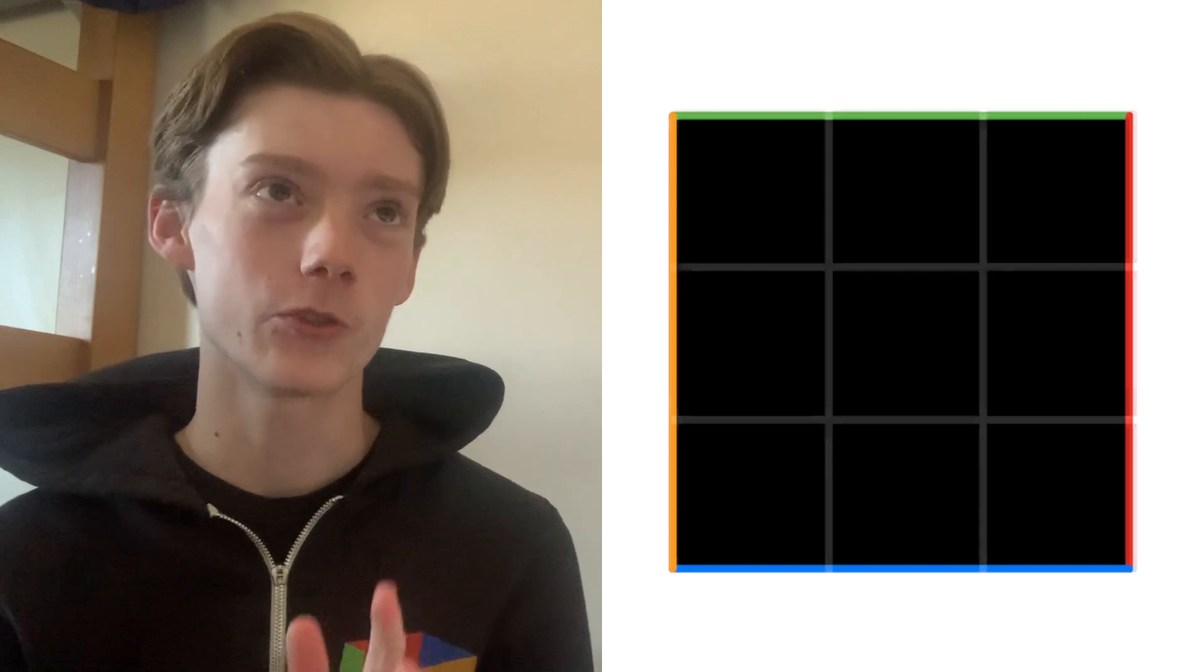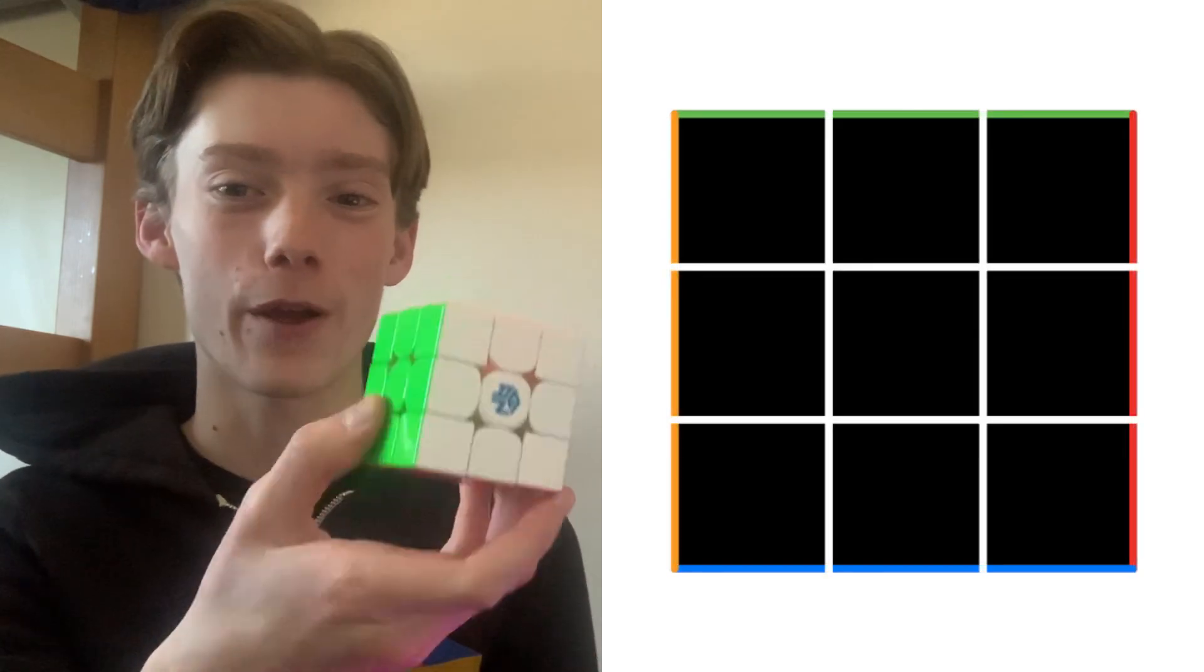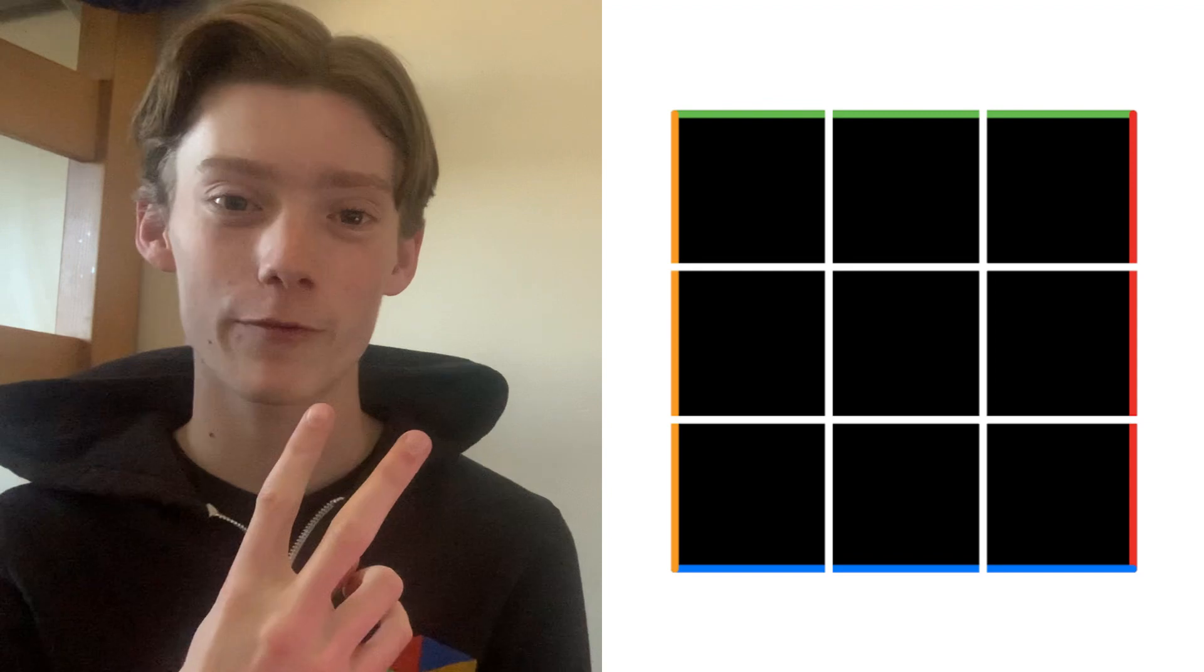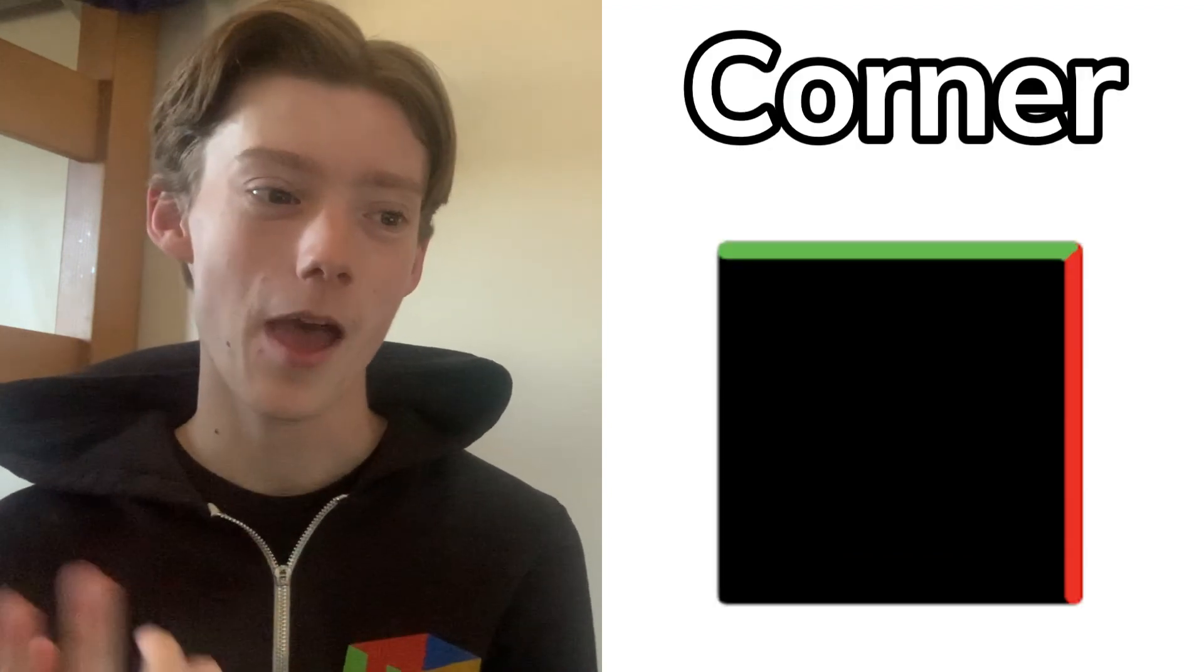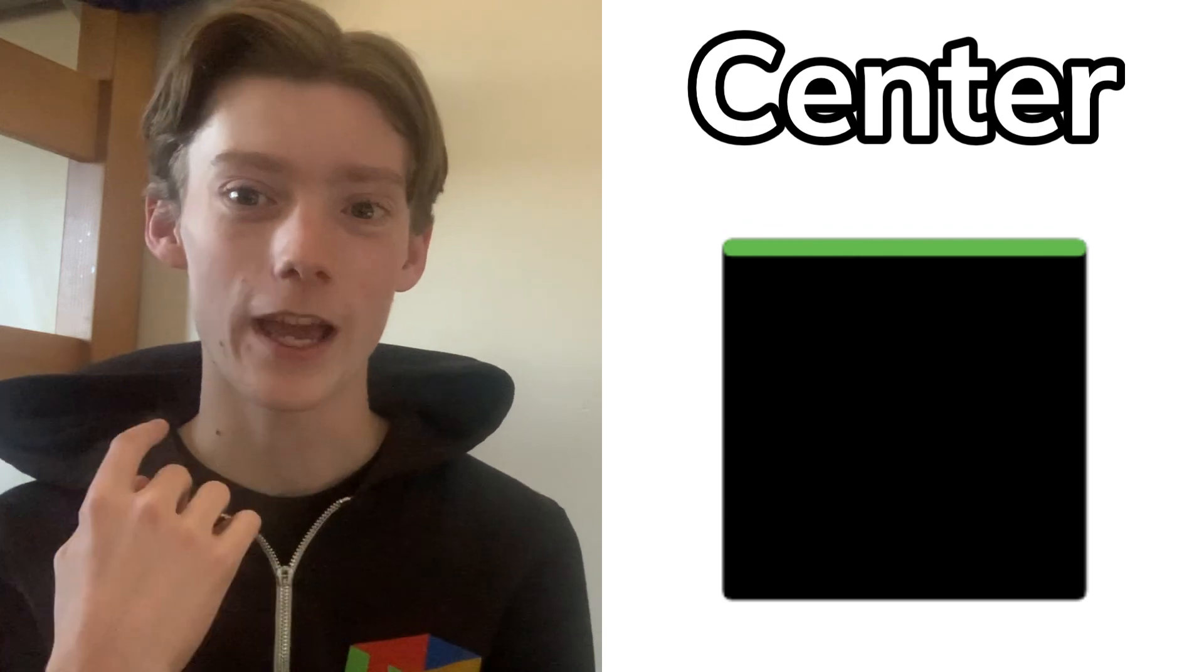So now, what would a two-dimensional Rubik's Cube look like? Well, first we start with a square, and then we kind of divide it into just a three by three, not a three by three by three. And this means that we get two types of pieces. There's the corner pieces that only have two colors, and the center pieces which only have one color.